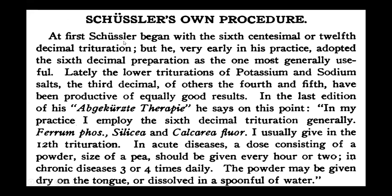Schussler began with the sixth centesimal or twelfth decimal trituration, but very early in his practice adopted the sixth decimal preparation as the one most generally useful. Lately, the lower triturations of potassium and sodium salts — the third decimal — and of others the fourth and fifth have been productive of equally good results. He says: 'In my practice I employ the sixth decimal trituration generally. Ferrum Phos, Silica, and Calcarea Fluor I usually give in the twelfth trituration.'